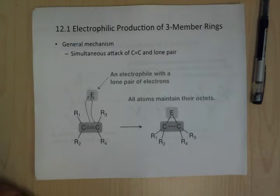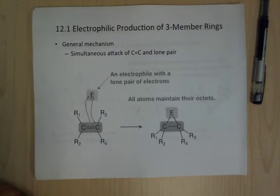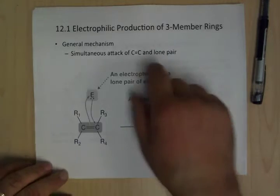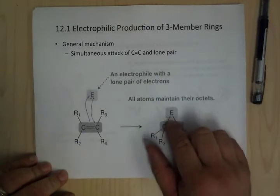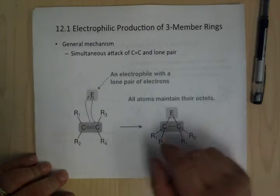Hello, we're on to chapter 11 here, and so we're going to be talking about doing more reactions with alkenes and alkynes. A lot of these things are production of three-membered rings — cyclopropanes and epoxides.